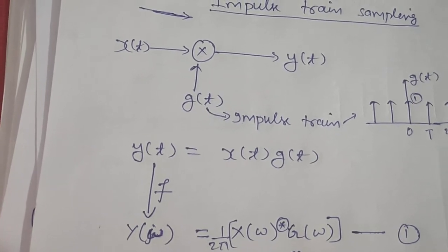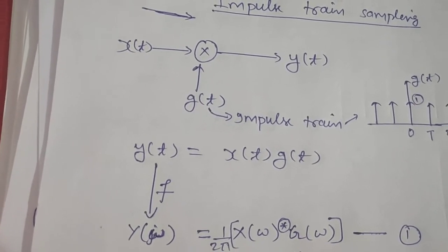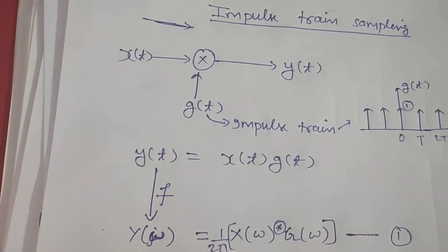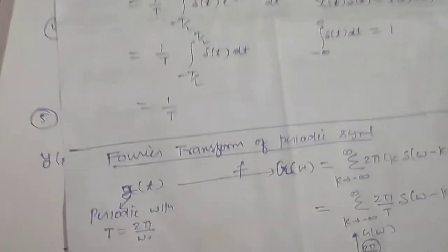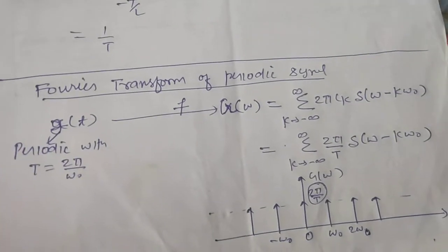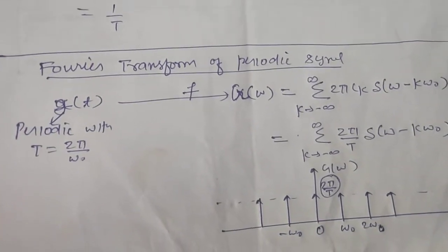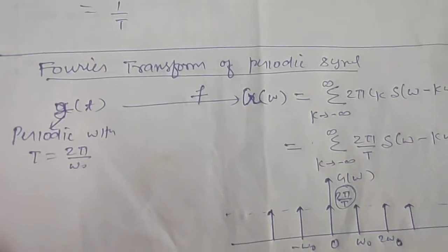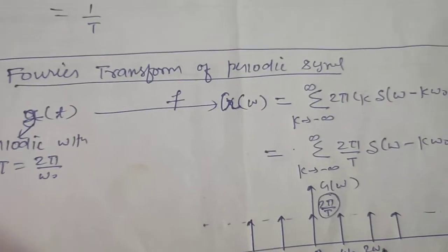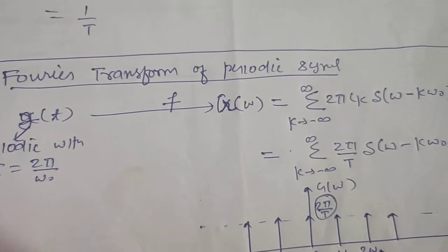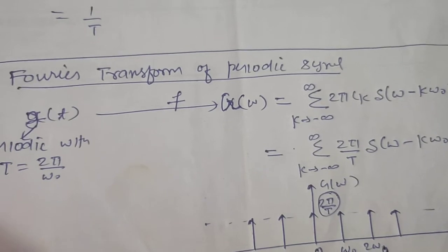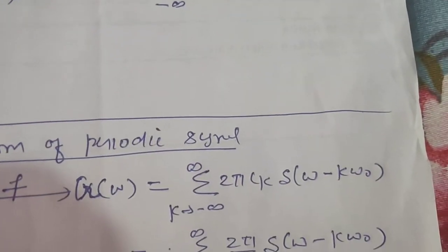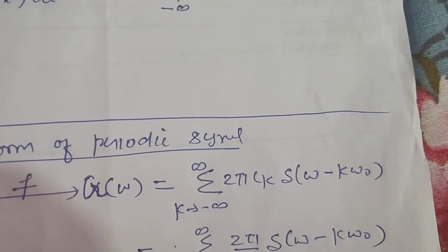X(ω) is the Fourier transform of x(t) and G(ω) is the Fourier transform of g(t). Now let us see how to find the Fourier transform of the impulse train. Since the impulse train is a periodic signal with time period T, we know the formula for the Fourier transform of a periodic signal: G(ω) equals summation from k equals minus infinity to infinity of 2π·c_k·δ(ω minus k·ω₀).